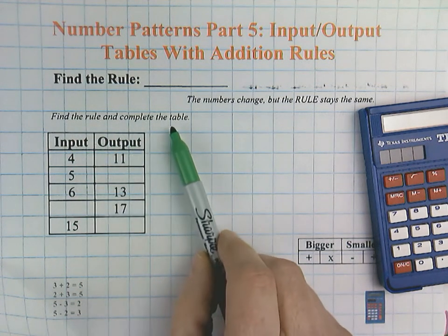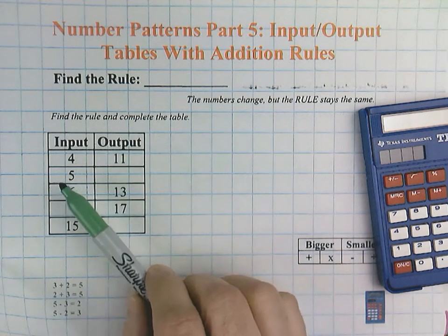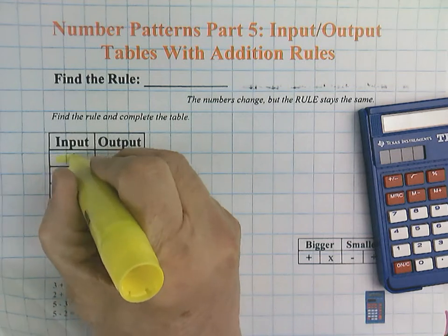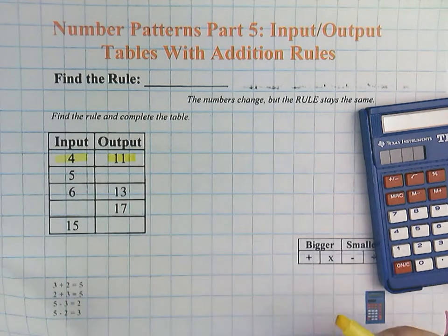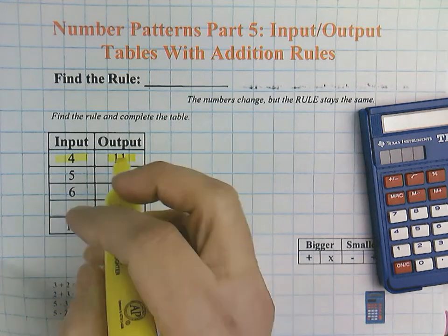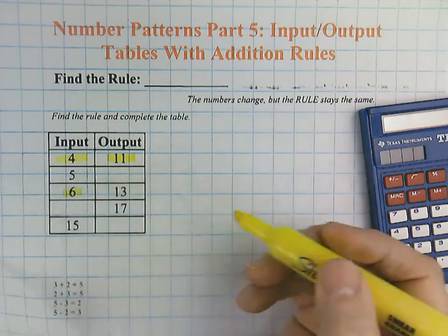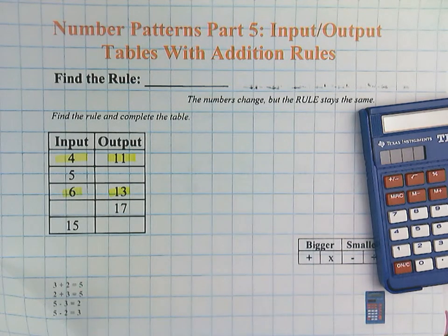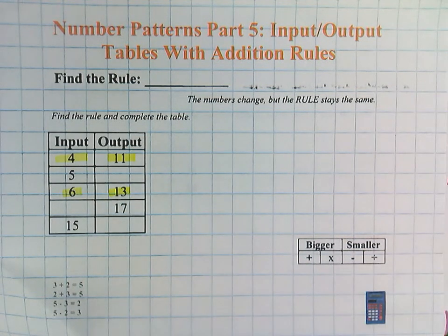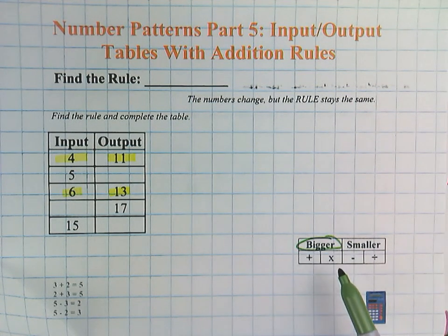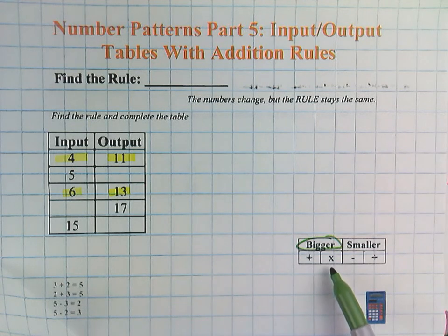Find the rule and complete the table. Input 4, Output 11. I'm going to skip one row because we don't have an output. Input 6, Output 13. The numbers are definitely getting bigger, and when the numbers get bigger it's either going to be an addition rule or a multiplication rule.